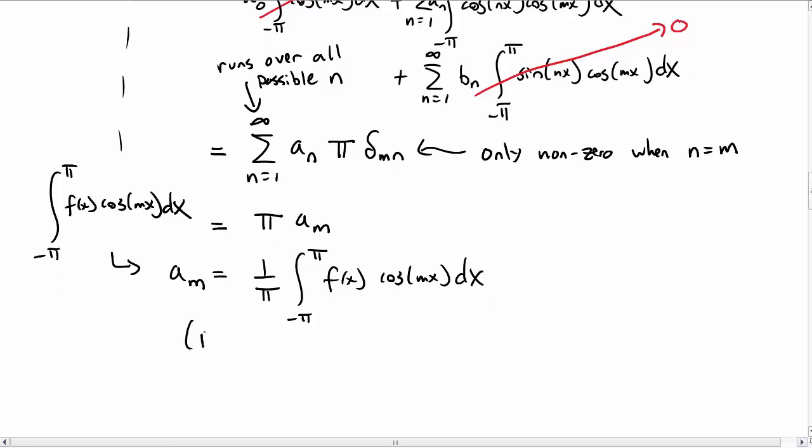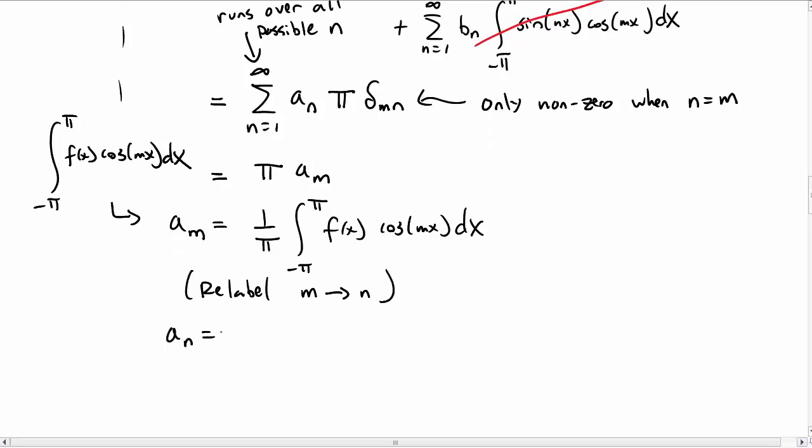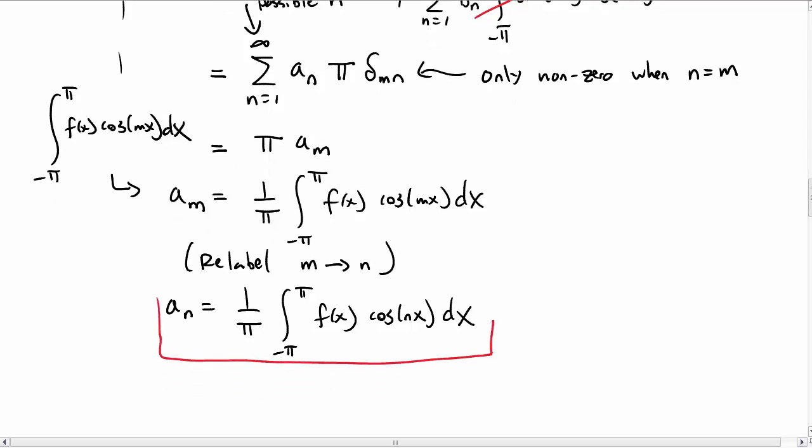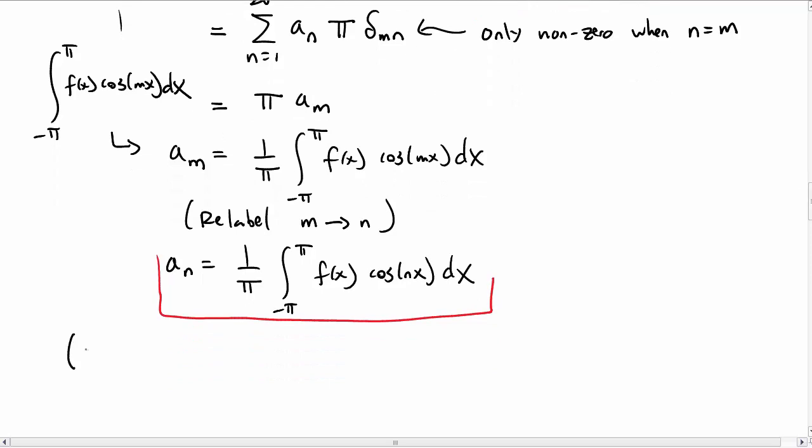It's common, in fact, to relabel the m to an n. It's just an index, so we can call it whatever we want. So let's just call it a sub n. And then we have the integral f(x), cosine of nx dx. So this tells us what to do. If I give you a function f(x), you can compute the a sub n by computing this integral. There's a similar procedure to get the b sub n for the sine expansion, and I'll let you work that out on your own.